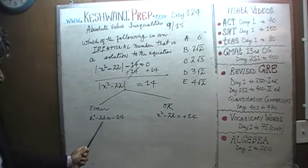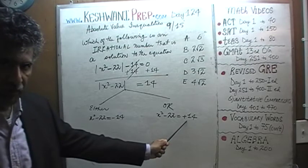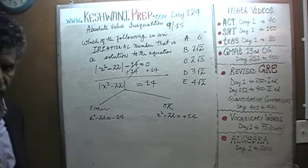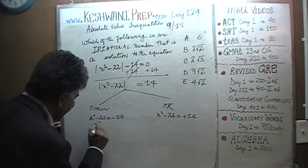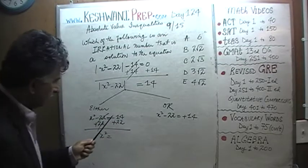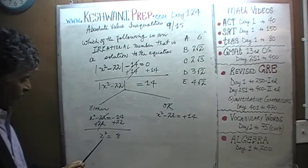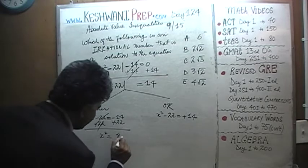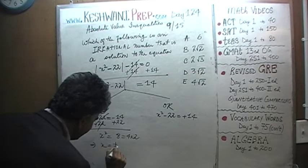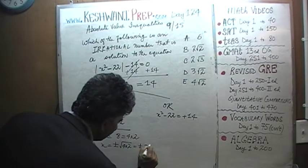Either x squared minus 22 equals negative 14 — because absolute value of negative 14 is 14 — or x squared minus 22 equals positive 14, because absolute value of positive 14 is also 14. Now we solve for x. Adding 22 to both sides: x squared equals negative 14 plus 22, which gives us positive 8. So x equals positive or negative square root of 8, which is 2 root 2.